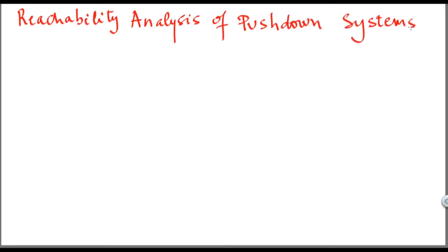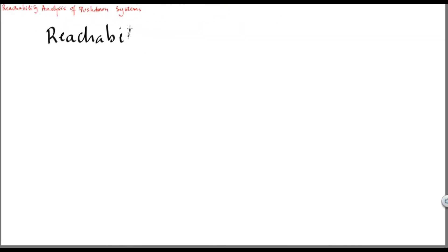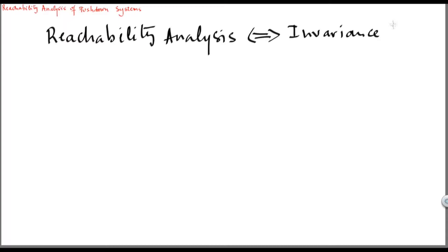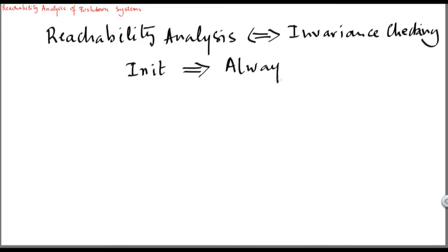This presentation is about reachability analysis of pushdown systems. Reachability analysis is a fundamental issue in the context of system verification. It's the dual of invariance checking. Consider a system and assume that you want to check that starting from a set of initial configurations, all the behaviors of this system will stay in a set of states which are safe. In order to check this fact,